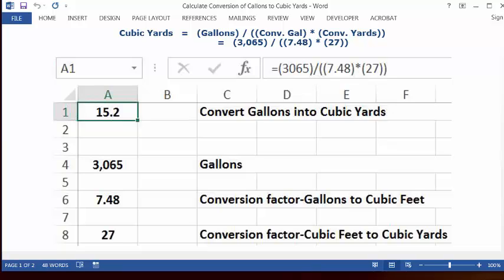And in your cell A1, is your answer: 15.2 cubic yards in 3,065 gallons. So that's your answer.